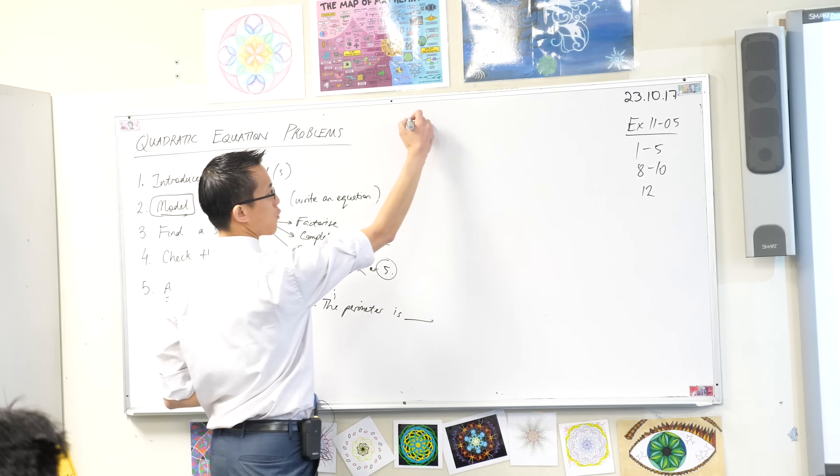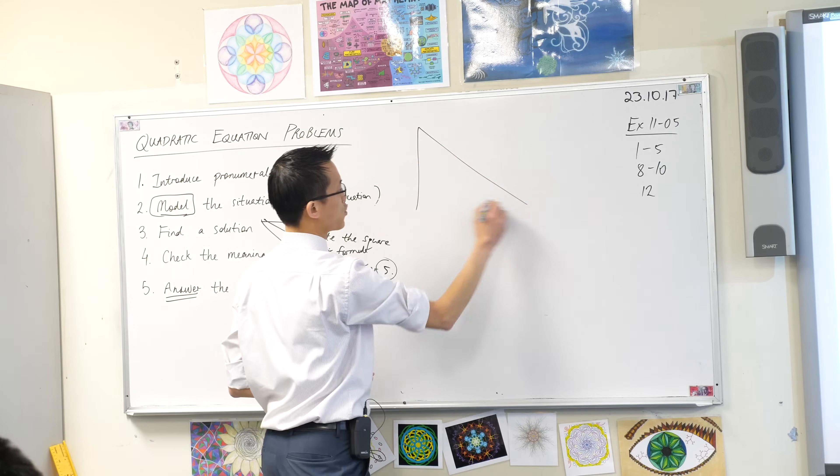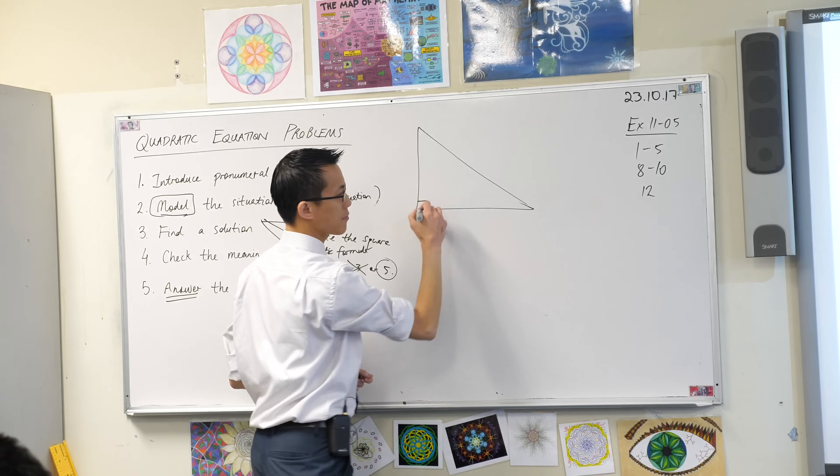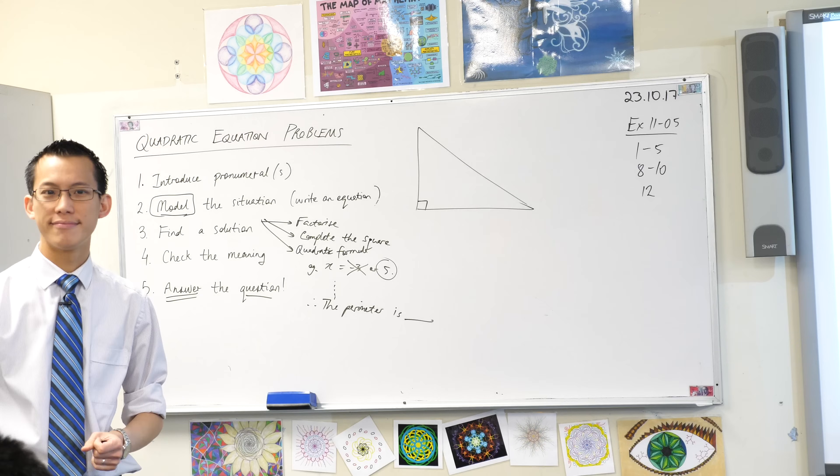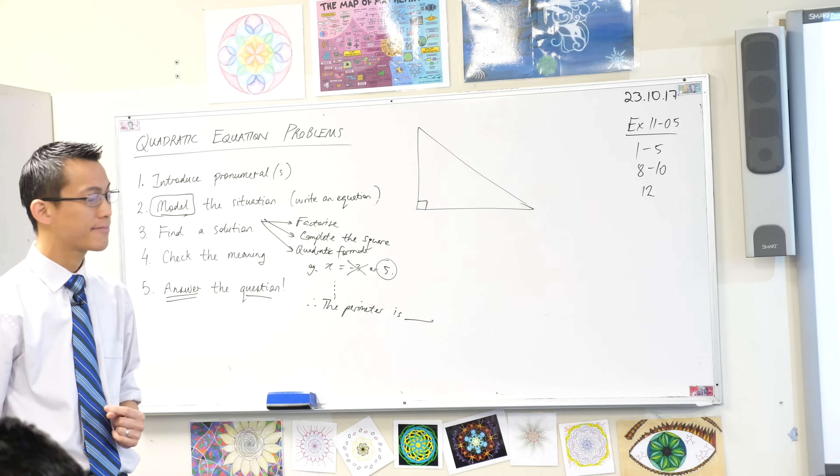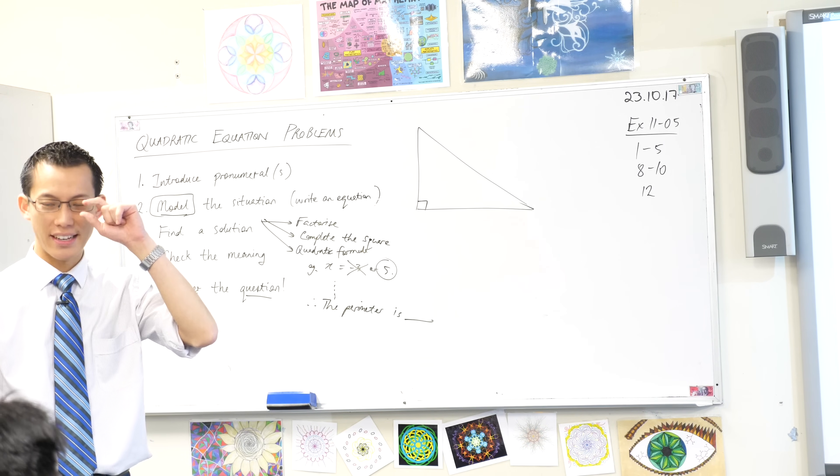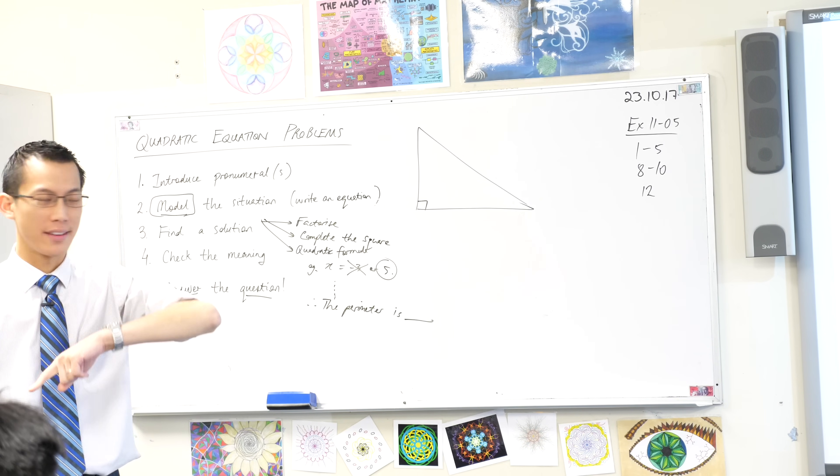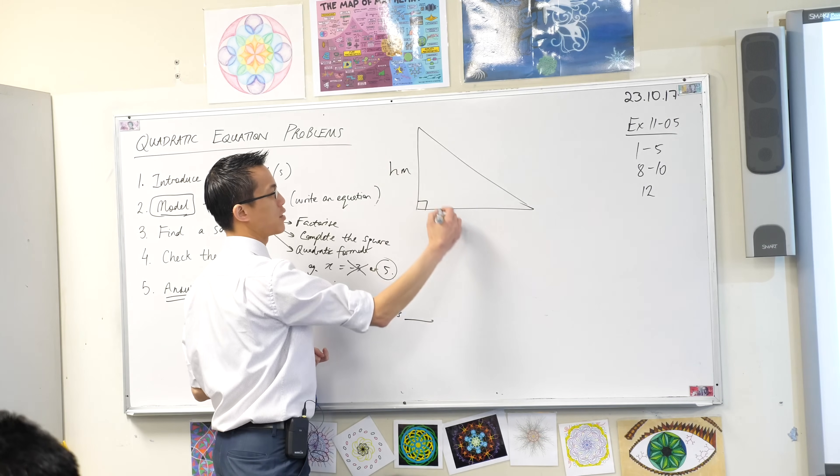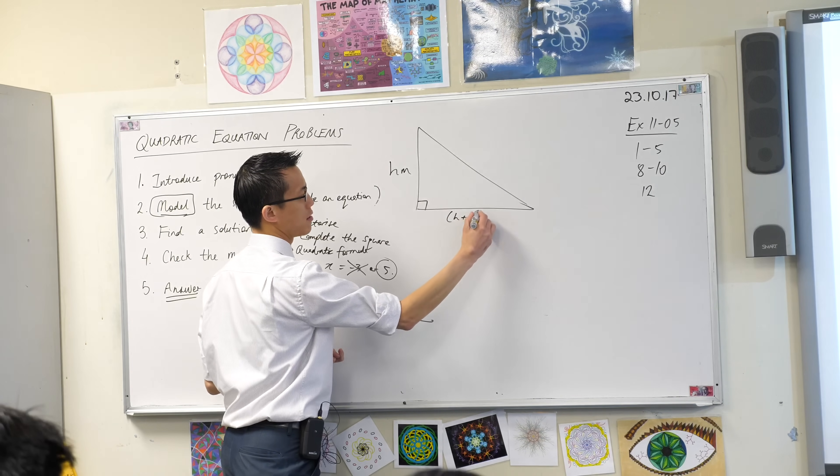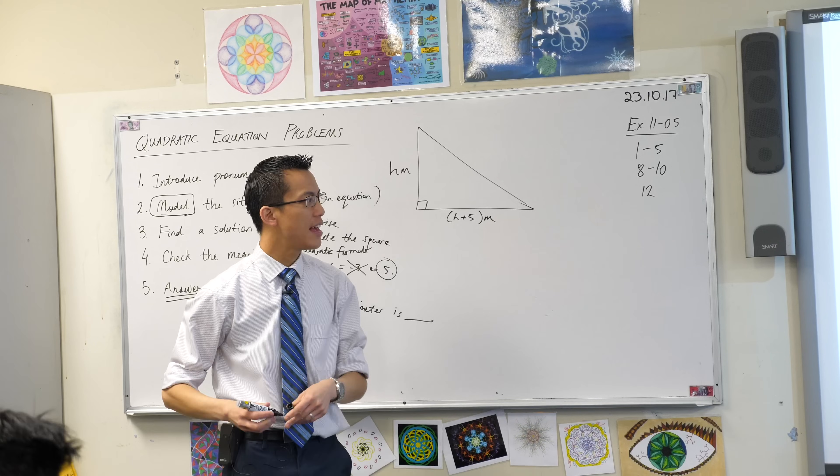It says a park is in the shape of a right-angled triangle. Maybe you want to draw one with me. You've got your right-angled triangle there. They've conveniently provided a couple of measurements already on there, so we might as well also include them.